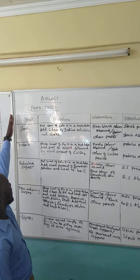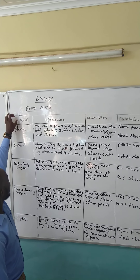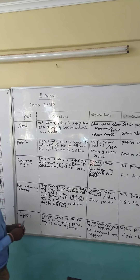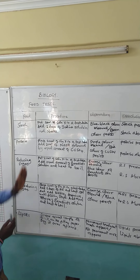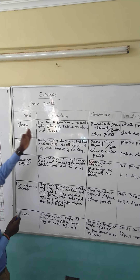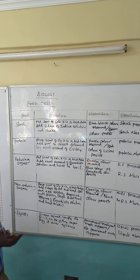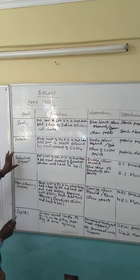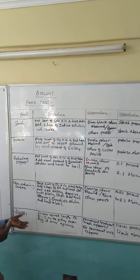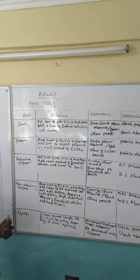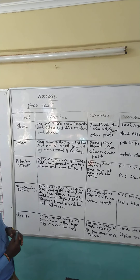Sometimes you can be given a table. If the first column is written 'test,' then you talk about starch test, protein test — protein test is also called the Biuret test — the reducing sugar test, the lipid test, something like that. If you are given 'food,' then you are supposed to name that food substance.